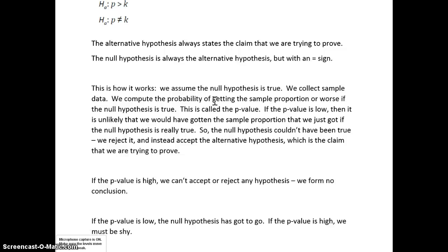If the p-value is low, it means it is unlikely that we would have gotten that p-hat if the null hypothesis is really true. So if it's unlikely we would have gotten that p-hat value, then our assumption was wrong — the null hypothesis couldn't have been true. Therefore, we reject the null and instead accept the alternative hypothesis, which is the claim we're trying to prove.